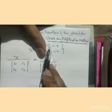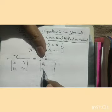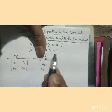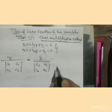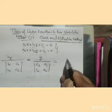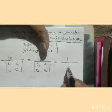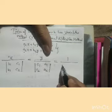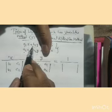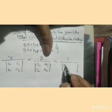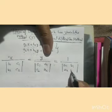We have to first write constant terms C1, C2, then we write A1, A2, and again take equal to 1 upon. We have seen there the coefficient of x and y: A1, B1, A2, B2.